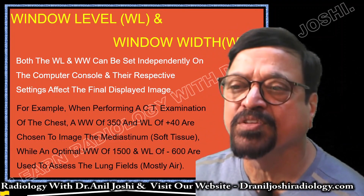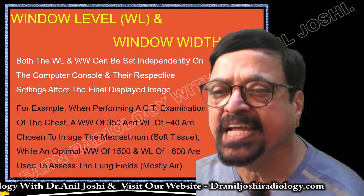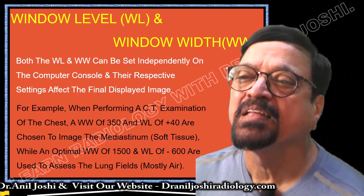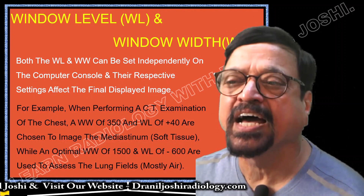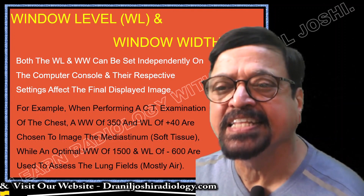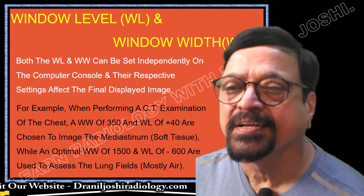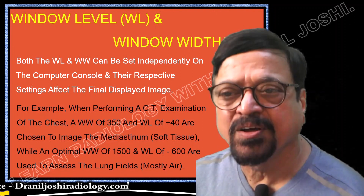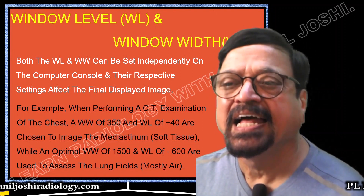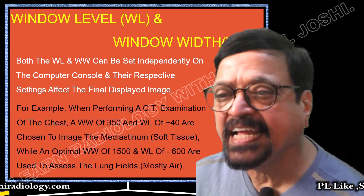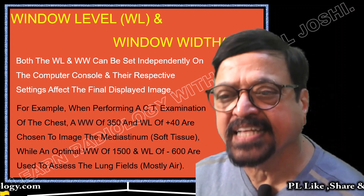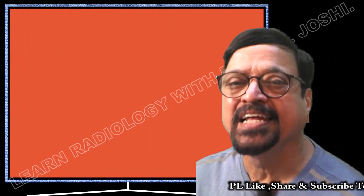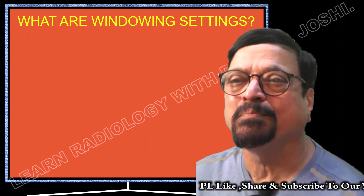For example, when performing a CT examination of the chest, a window width of 350 and window level of +40 are chosen to image the mediastinum, because soft tissues in the mediastinum are around 40 HU and a width of 350 is adequate. While an optimal window width of 1500 and window level of −600 are used to assess the lung fields — mostly air — because air is negative, we set the window to minus 600 to visualize it.